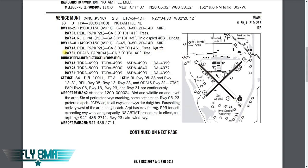Runway 31 has ODALs, PAPIs — four-light PAPIs on the left side of the runway. Glide angle three degrees, threshold crossing height 40 feet, and there are trees. Both runway 13 and runway 31 now have displaced thresholds, so it looks like this chart just hasn't been updated yet.